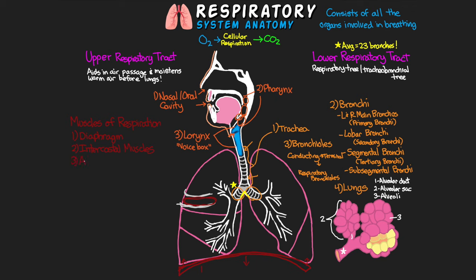The last group is the accessory muscles. These muscles assist with respiration but don't play a primary role — they're typically only used under conditions of high metabolic demand such as exercise or respiratory dysfunction. They include muscles such as the sternocleidomastoid, scalenes, pectoralis, and trapezius, among others. If you see these muscles being used at rest, that is a sign of respiratory distress.